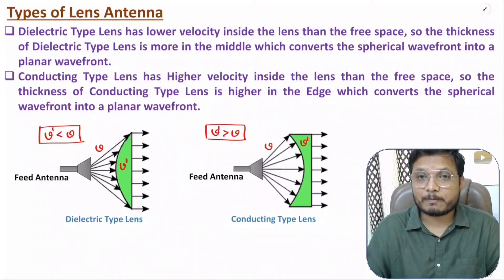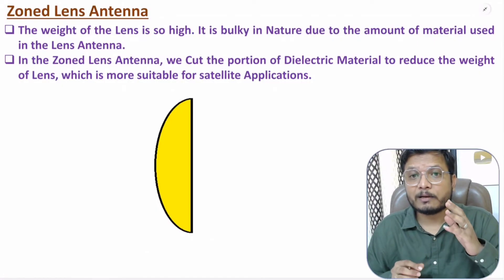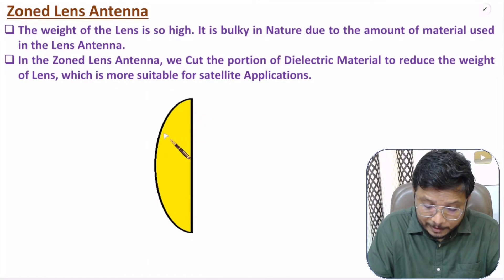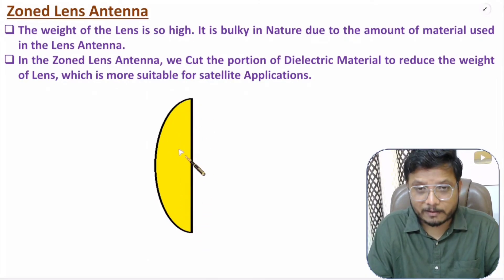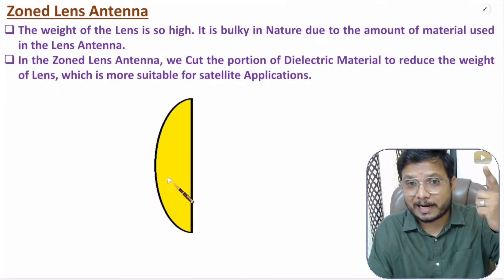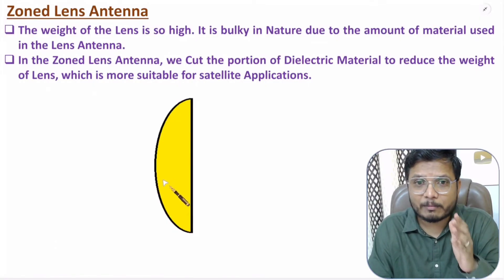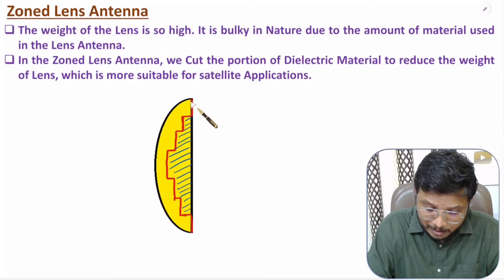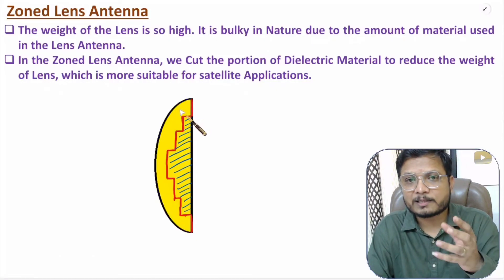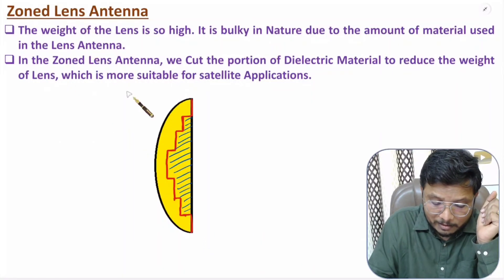Now I'll explain the zoned concept. The lens antenna structure is very heavy and bulky because the lens is completely filled with material. A bulky antenna cannot be used in satellite applications because the cost of weight is too high on a satellite. To reduce the weight, we can use the zoned concept, in which we cut sections of material. This way, only part of the material remains, giving lower weight compared to a complete lens.